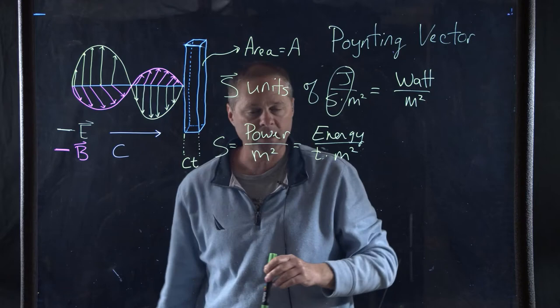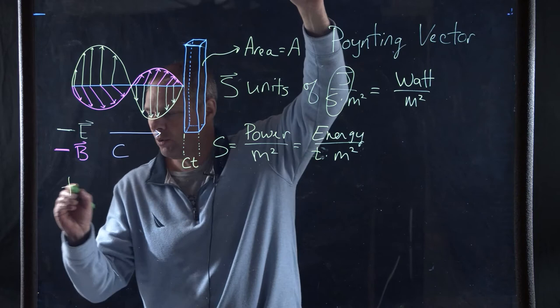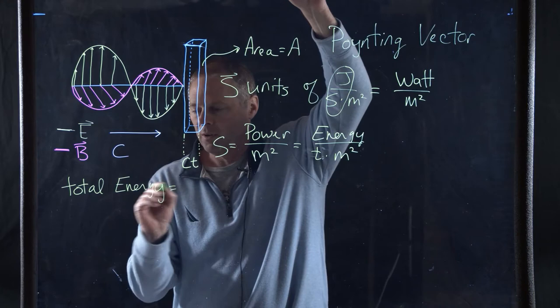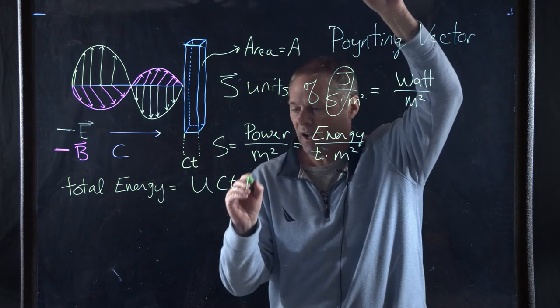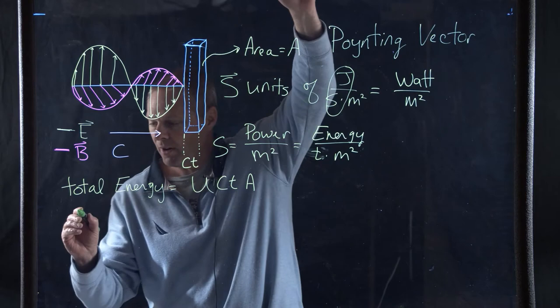Now, remember, in the previous video, we looked at the energy for an electromagnetic wave. We looked at the energy for both the electric field as well as the magnetic field. So we have the total energy, total energy is equal to U, which is our energy, we've seen that previously, times the distance that has traveled, which is CT, times the area. That's our total energy.